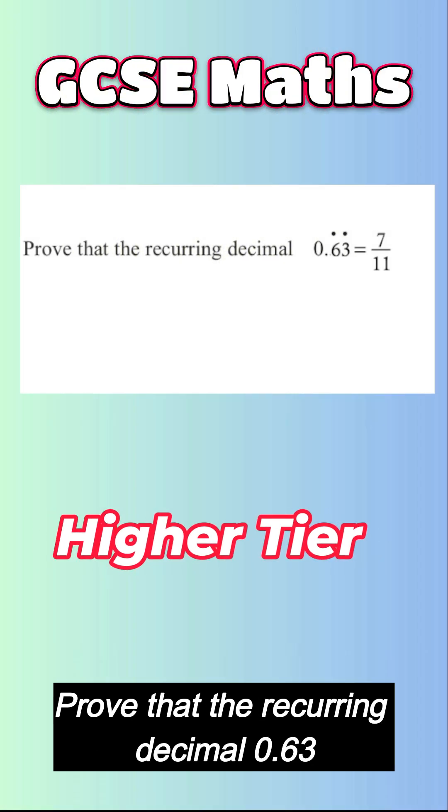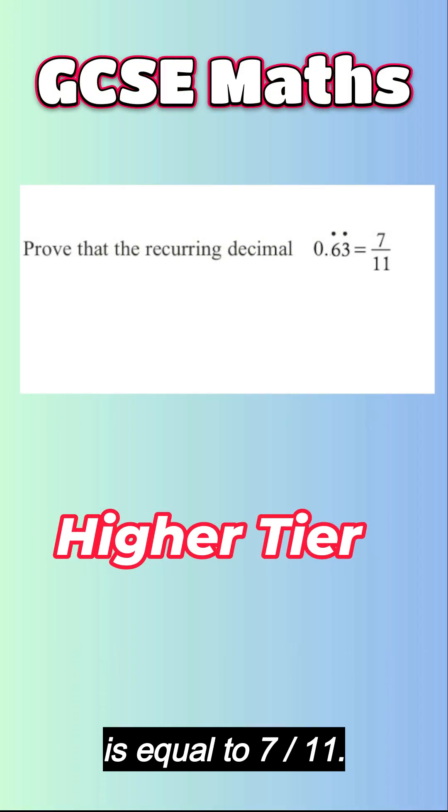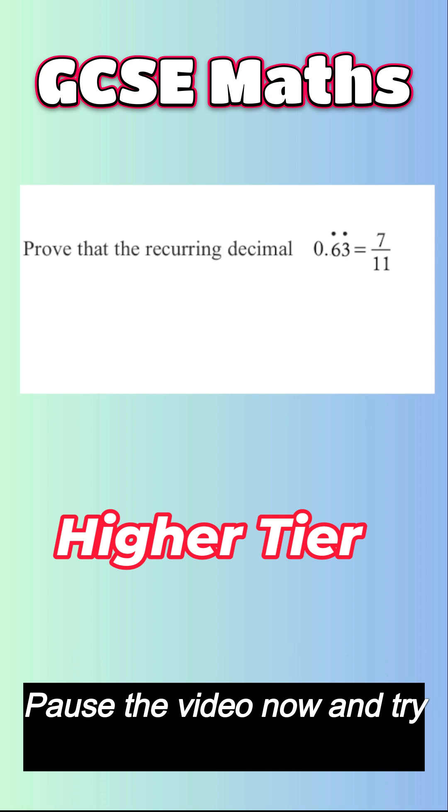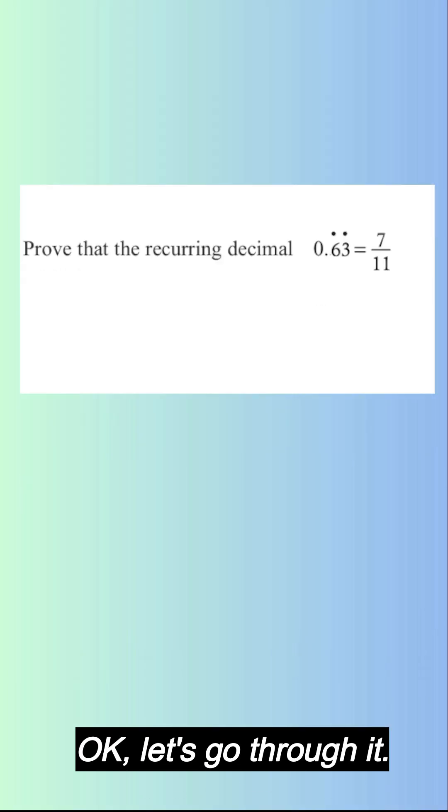Prove that the recurring decimal 0.63 is equal to 7 over 11. Pause the video now and try this yourself. Okay, let's go through it.